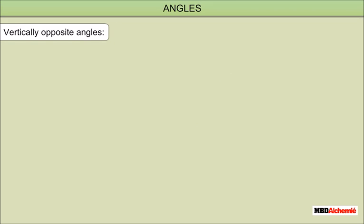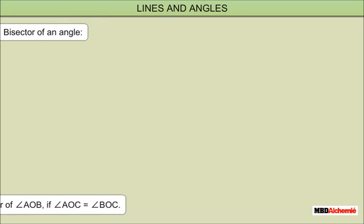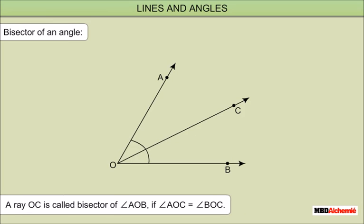Vertically Opposite Angles: Any two angles formed by two intersecting lines that are not adjacent are called vertically opposite angles. Angle AOD and angle BOC form one pair of vertically opposite angles. Bisector of an Angle: A ray OC is called the bisector of angle AOB if angle AOC equals angle BOC, meaning angle AOC equals angle BOC equals half of angle AOB.